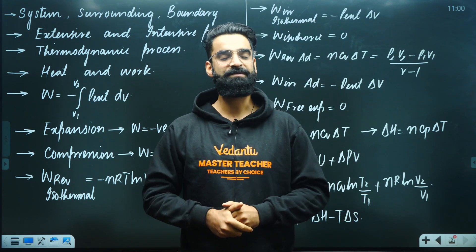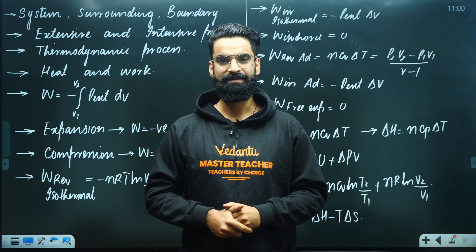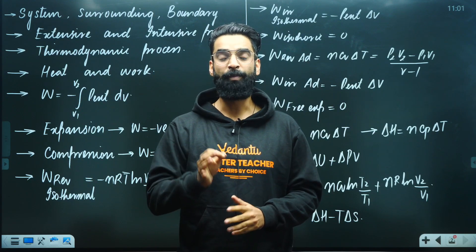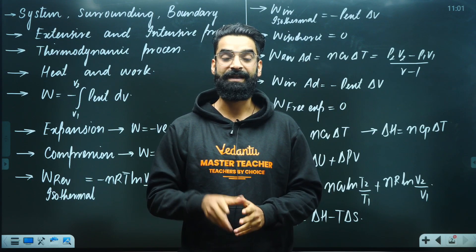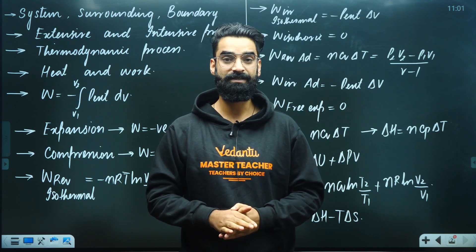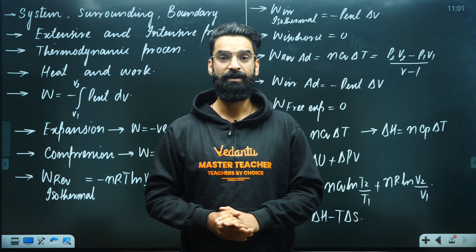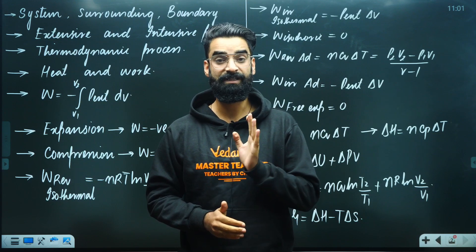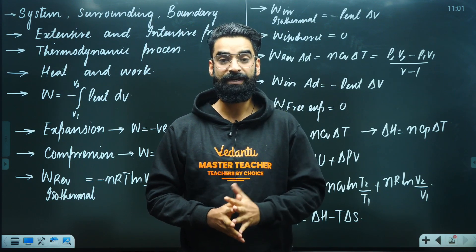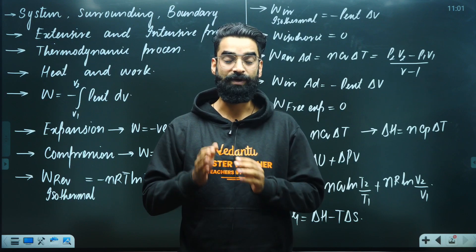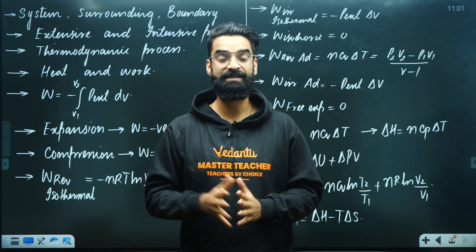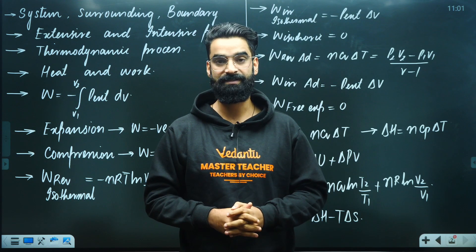Then we have got different types of systems as well. Systems are of three types. Number one: open system — open system is that system which can exchange both energy as well as matter with the surroundings. Closed system is the one which can exchange only energy with the surroundings, not matter. And then we have got isolated system, which cannot exchange either energy or matter.